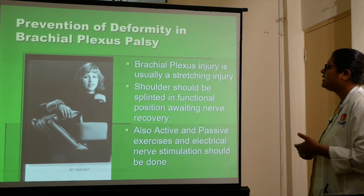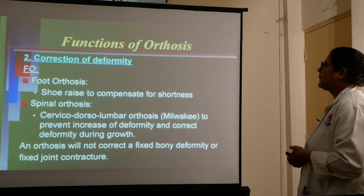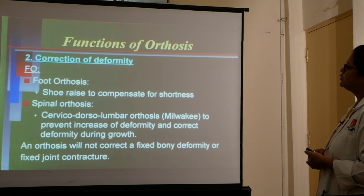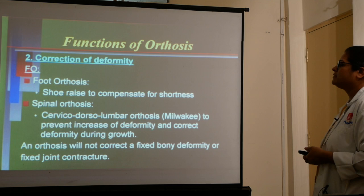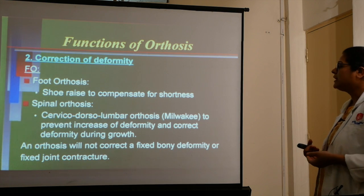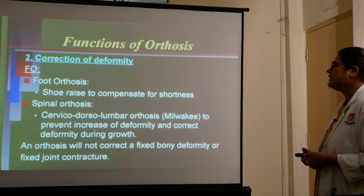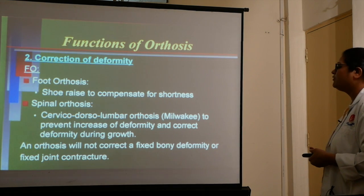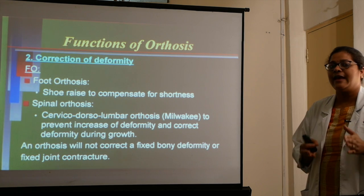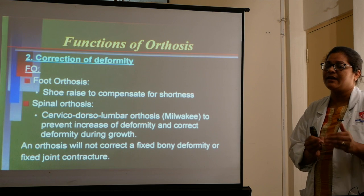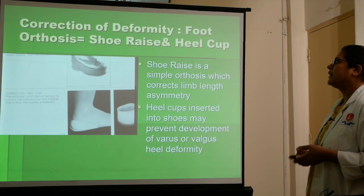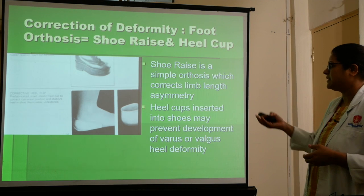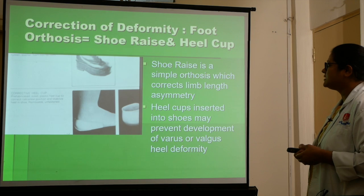Correction of deformity includes foot orthosis with shoe raise to compensate for limb shortness, and spinal orthosis such as cervico-dorsal lumbar orthosis. Milwaukee orthosis is used to prevent increase of deformity and correct deformity during growth. An orthosis will not correct a fixed bony deformity or fixed joint contracture; it basically supports the joint and enhances joint range of motion. This is how a heel cup looks.